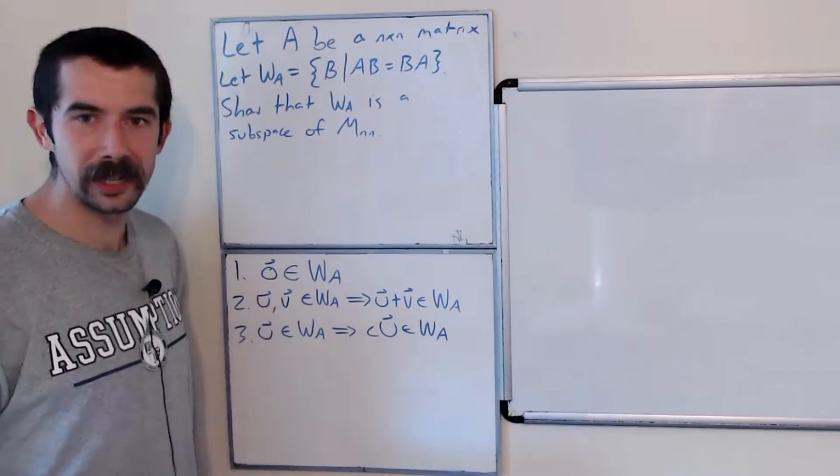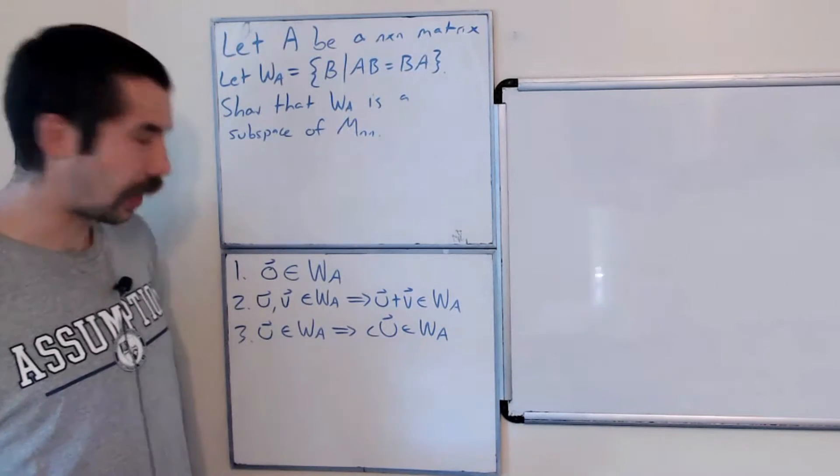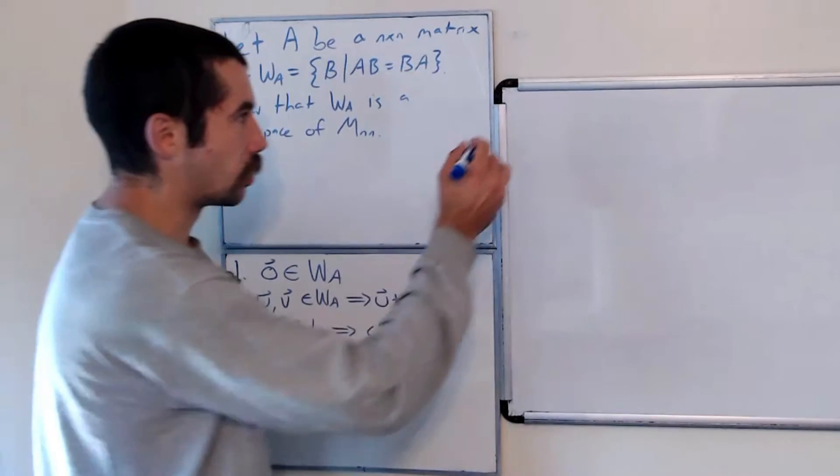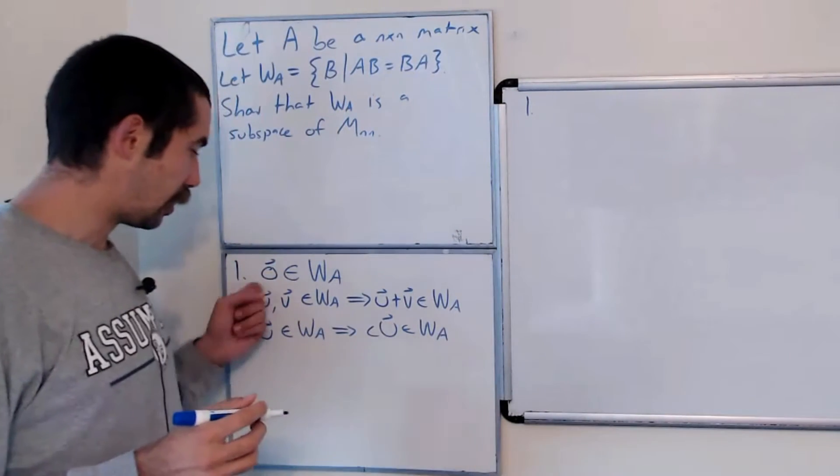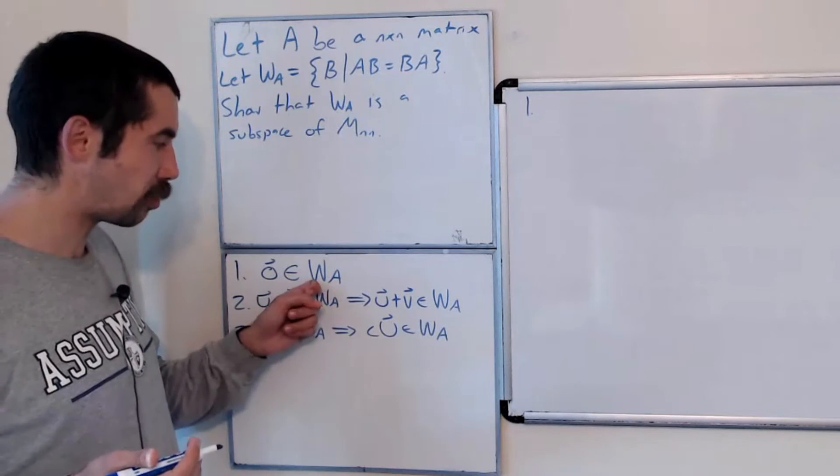And so if we show that these three conditions hold, then we're done. We've shown that W sub A is a subspace. So let's start with one. We want to show that the zero vector, the zero all zero matrix is in W sub A.